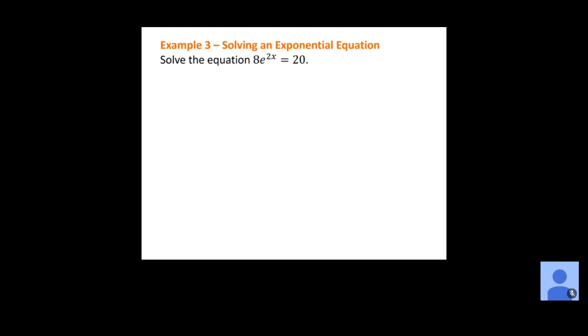If we want to solve this equation, our goal is to get x by itself. In this case, I've got an 8 as a coefficient of my e, so the first thing I want to do is get rid of that 8 by dividing both sides by 8. That leaves us with e to the 2x equals 20 divided by 8, which is 2.5, or 5 halves if you prefer the fraction. To get x out of the exponent, I need to use a logarithm.